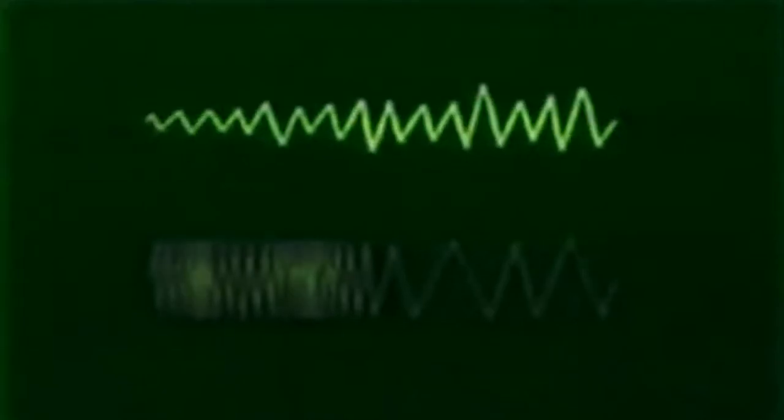Frequency modulation is when a signal is transmitted across one of the parameters of a constant amplitude cosine wave. As the cosine wave travels across the electromagnetic spectrum, a phase-lock loop can receive the signal and translate it into a usable sound wave.